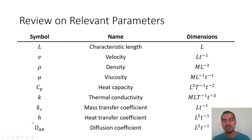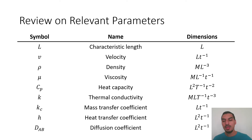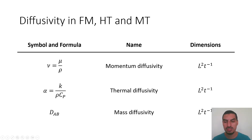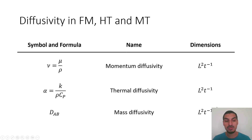Dab is the diffusion coefficient. Since diameter is sometimes also written as uppercase D, we add the subscript AB for the two species involved in mass transfer to indicate it's the diffusion coefficient. Regarding diffusivities: momentum diffusivity is μ/ρ (fluid mechanics), thermal diffusivity is K/(ρCp) (heat transfer), and the diffusion coefficient Dab is the mass transfer equivalent. All have units of m²/s, or L²T⁻¹.